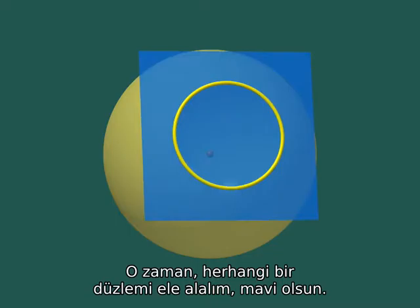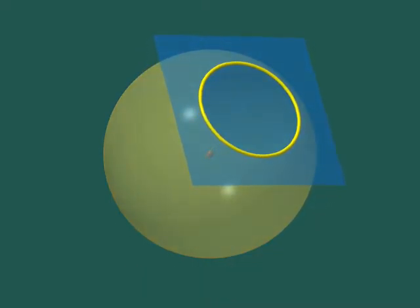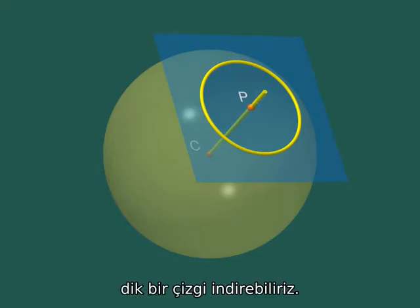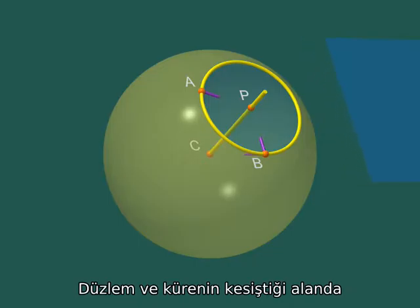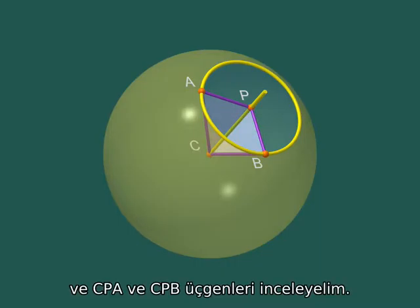Well, let's consider an arbitrary plane, coloured in blue. We can draw the perpendicular from the centre C of the sphere to the plane. Let's call P the foot of this perpendicular. Consider two points A and B on the intersection of the sphere and the plane.